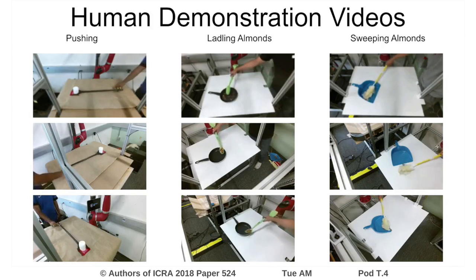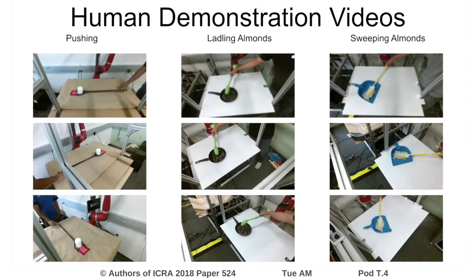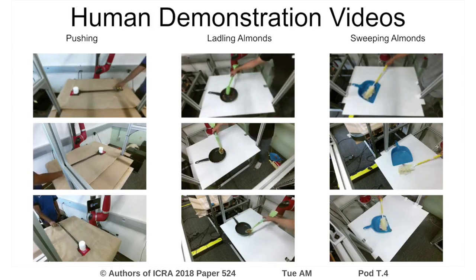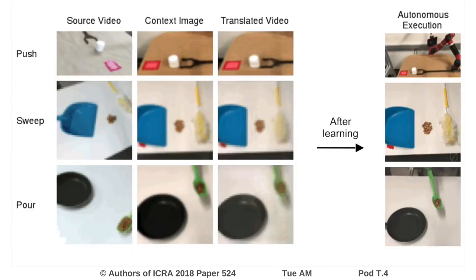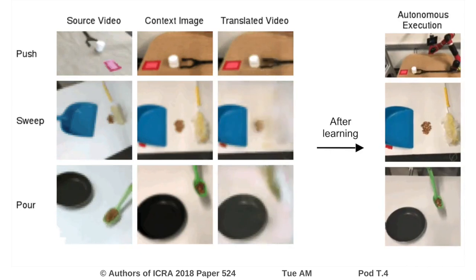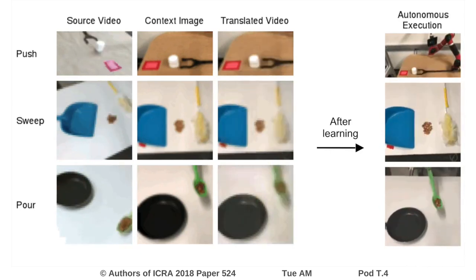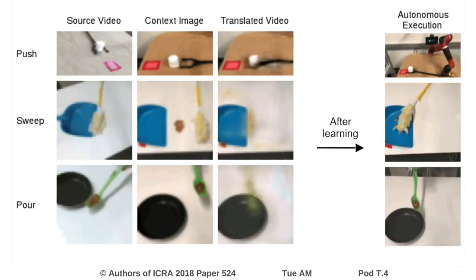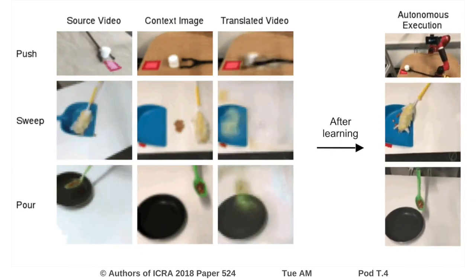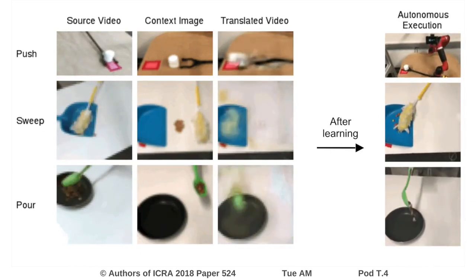We evaluate our method on a number of tasks from pushing to sweeping and ladling. Demonstrations are provided from a variety of contexts for each of the tasks. We found that our model was capable of making reasonable predictions of expert behavior, as well as enabling the robot to learn manipulation skills. As seen in the third column from the left, the model predicts reasonable expert behavior in new contexts, which allows for good reinforcement learning.